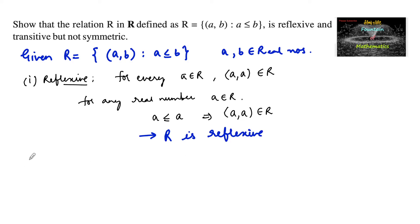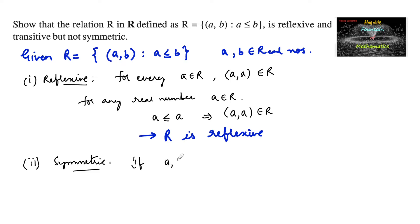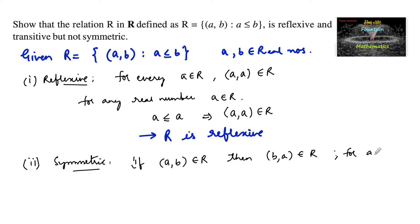Coming to the second property — symmetric. The condition for symmetric is: if (a, b) belongs to R, then (b, a) must belong to R, for a and b real numbers.